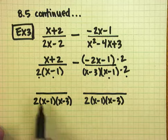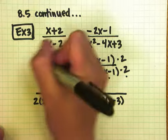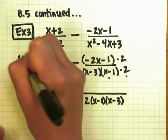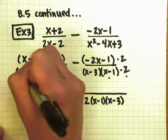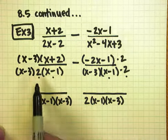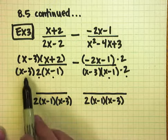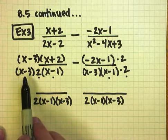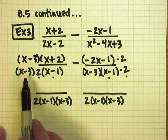If they both have to have x minus 3 and this one doesn't have it yet, then I have to multiply top and bottom by x minus 3. Please make sure you're not being lazy - you have to write it on top and bottom. If you don't, it's not mathematically correct and you will get marked down.